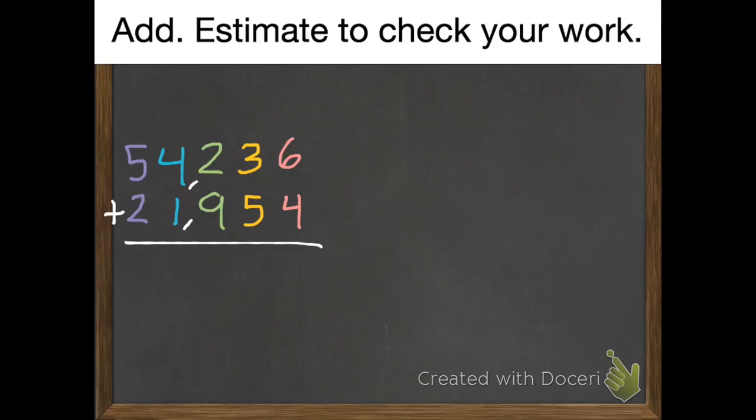One more example. Add numbers up to the ten thousand spot this time. I'm not going to draw my lines to divide it, since I have it color-coded. That already kind of helps me. So I'm going to start again with my ones, and work my way from the right to the left.